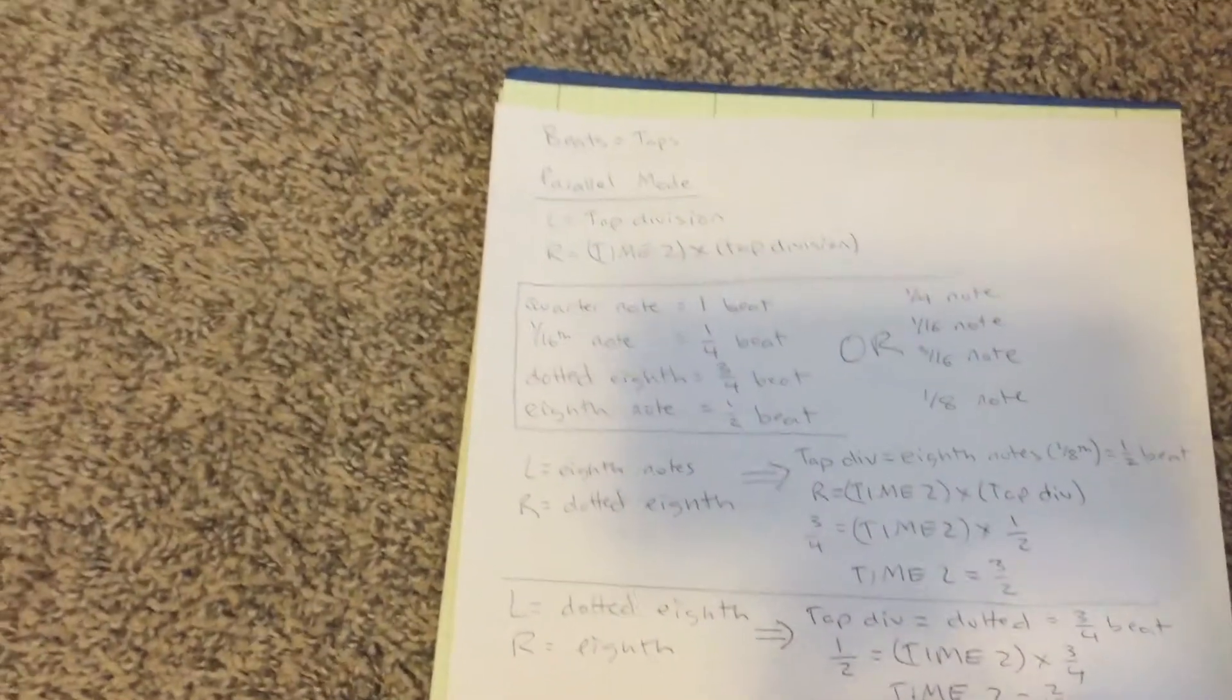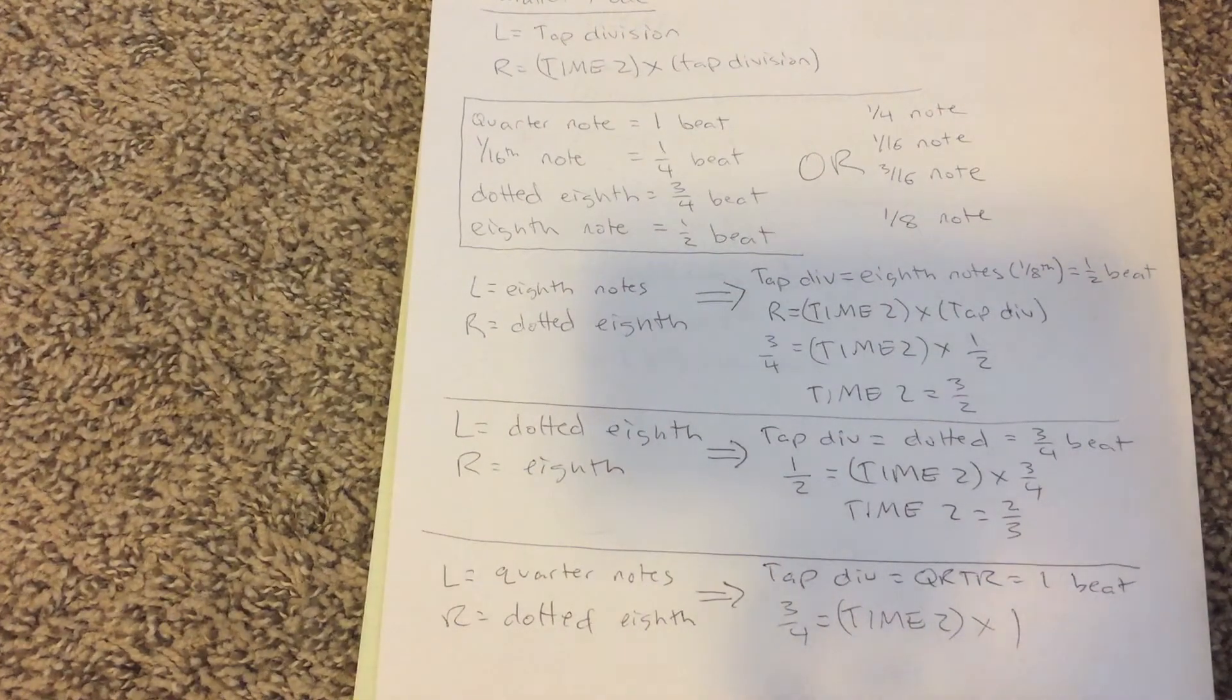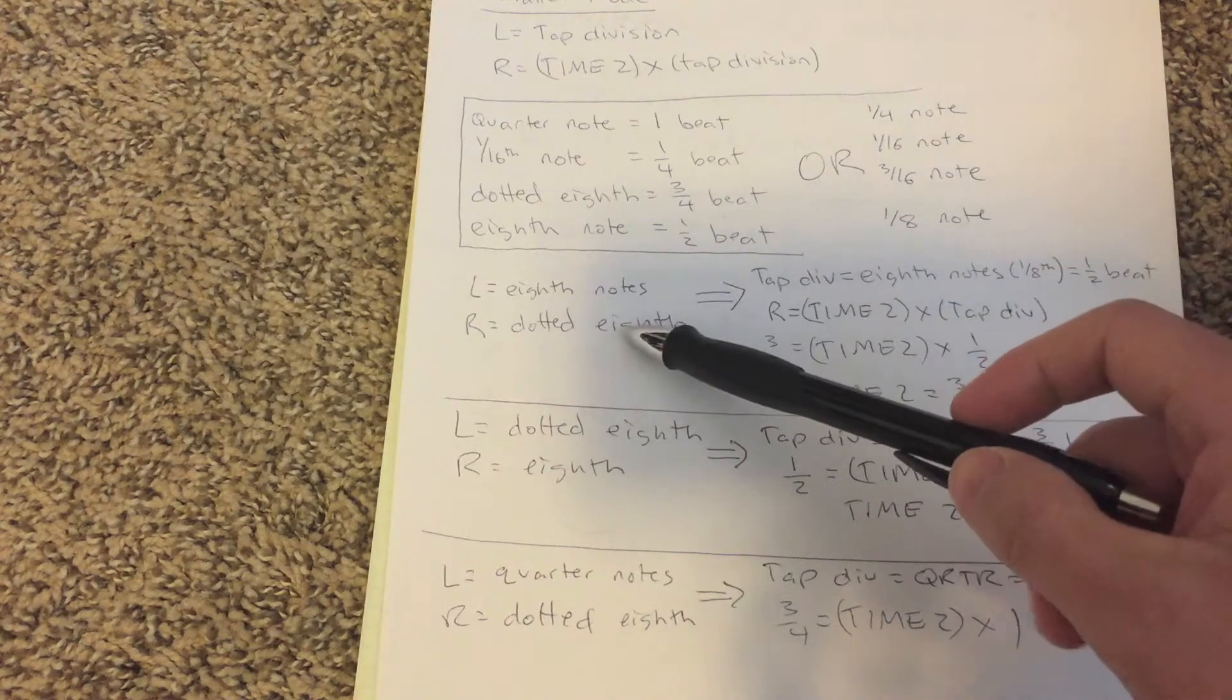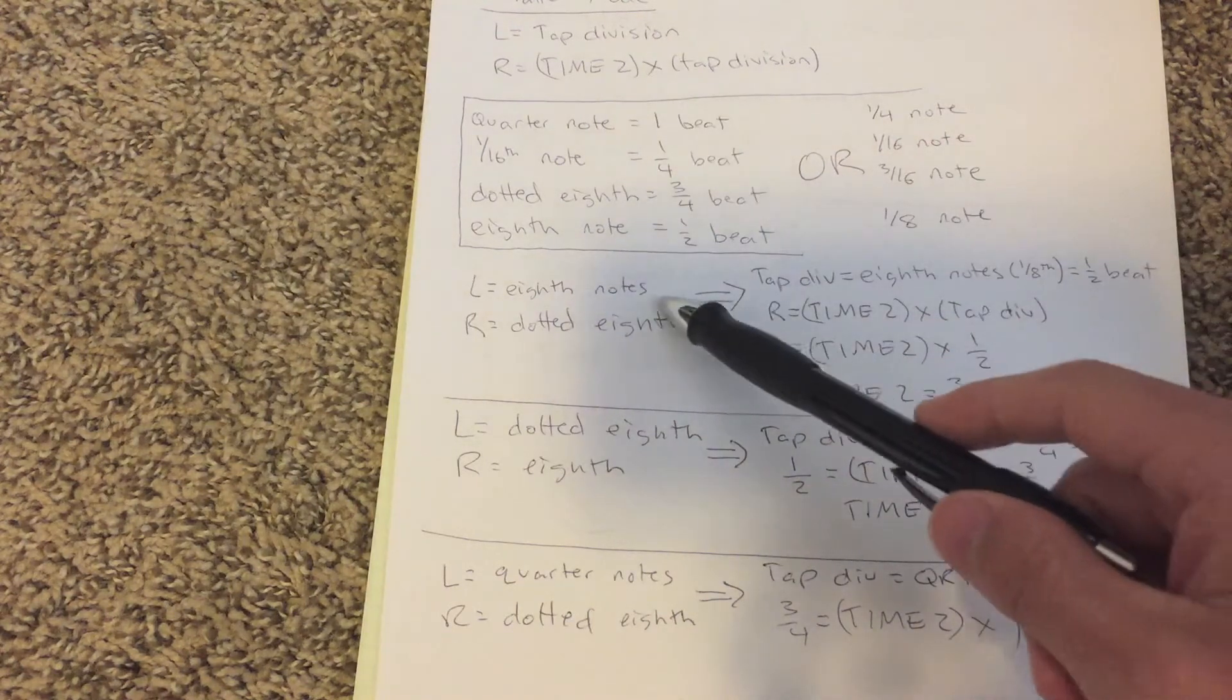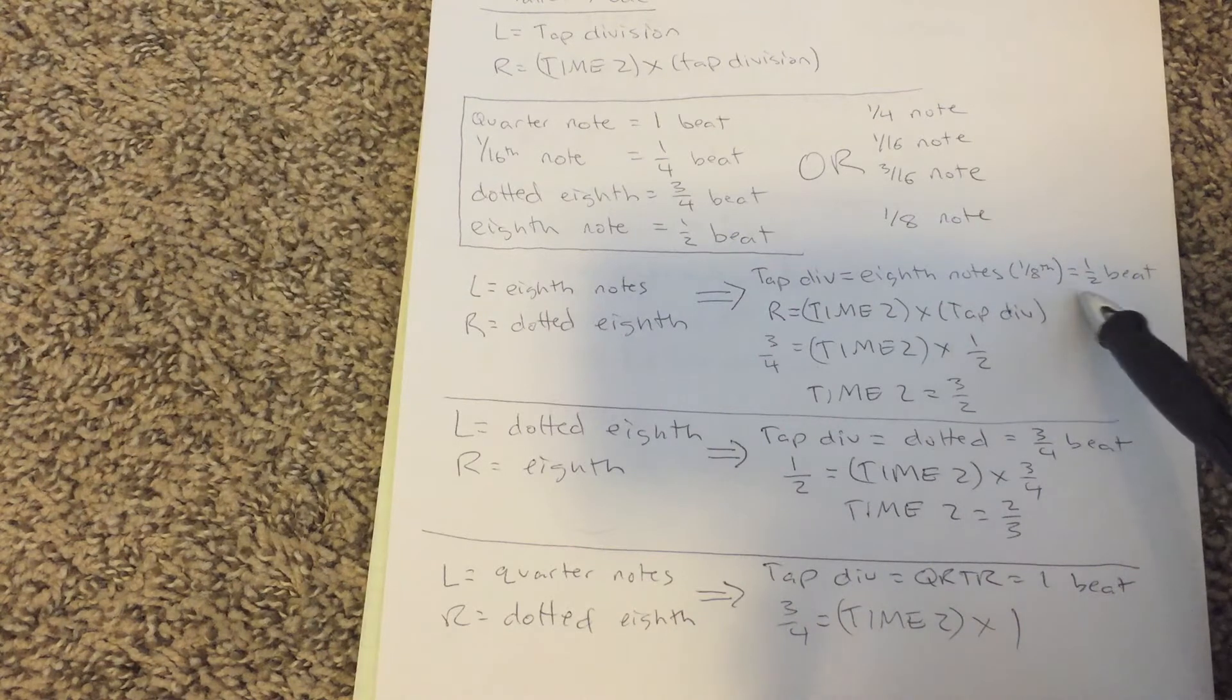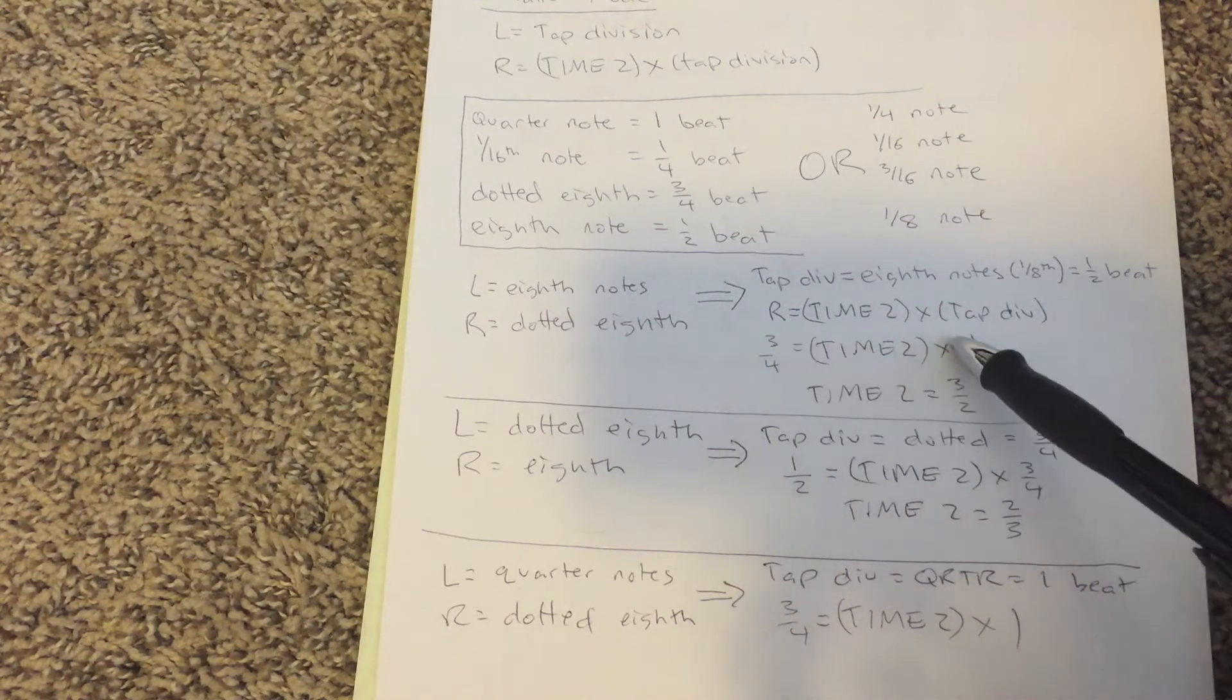So on the first example, I showed you this sound. We have eighth notes on the left and dotted eighths on the right. So this formula, I need my left to be set to eighth notes. So that's one eighth in the tap division setting and it's half a beat.